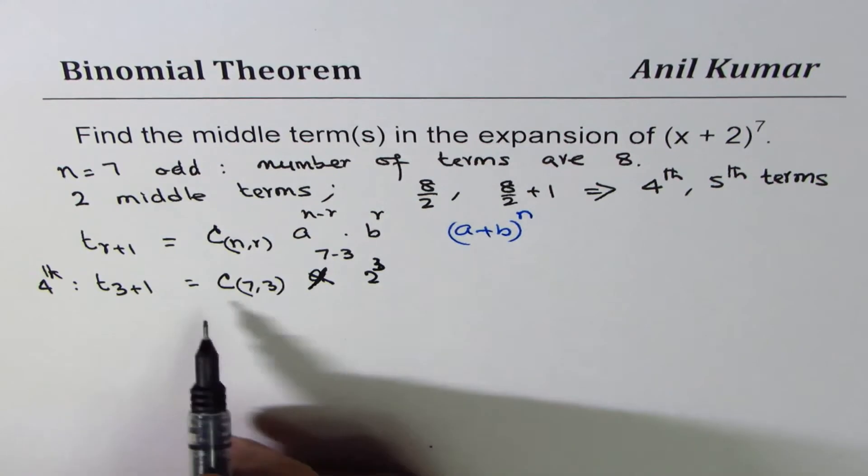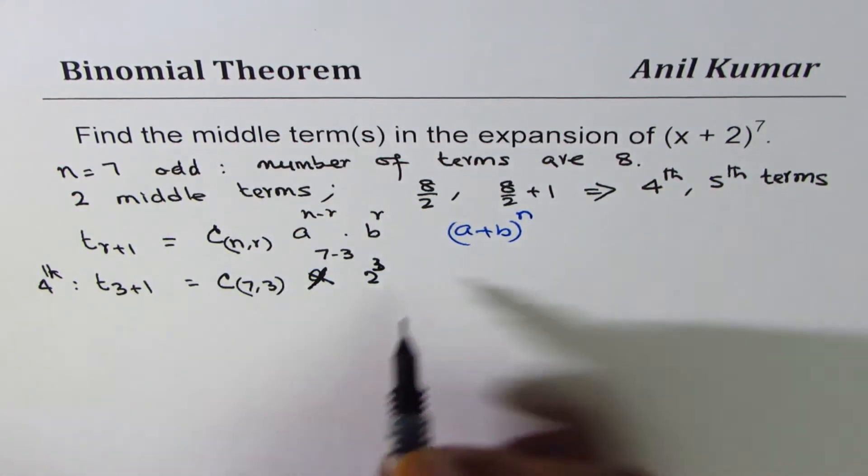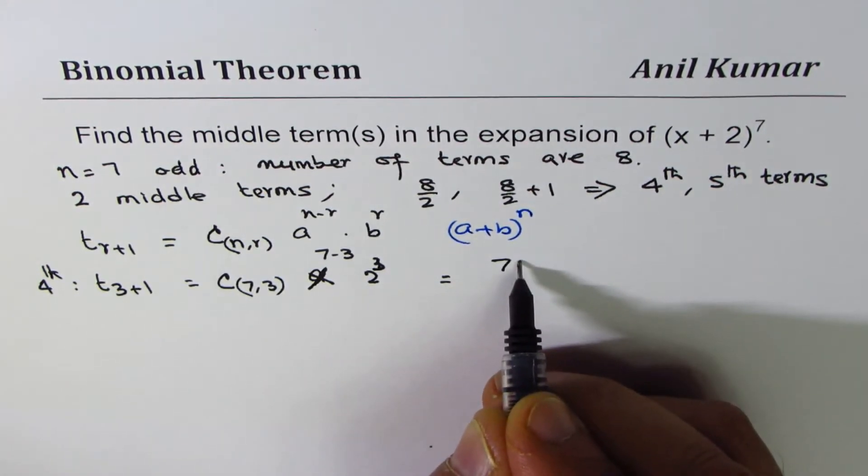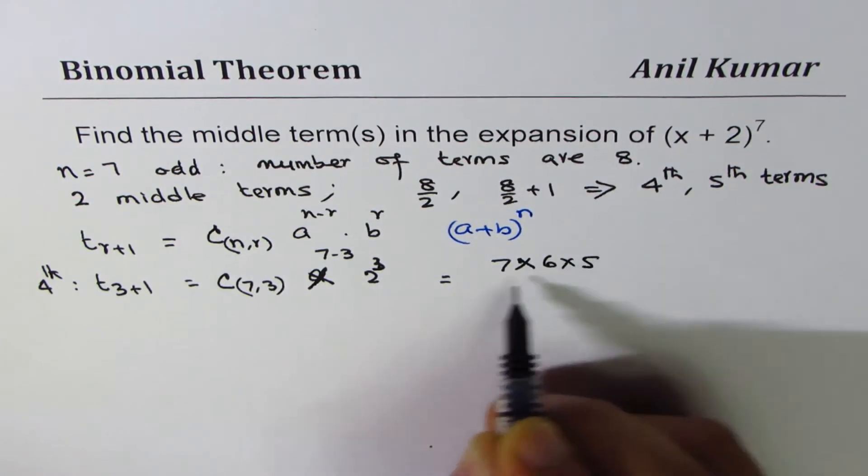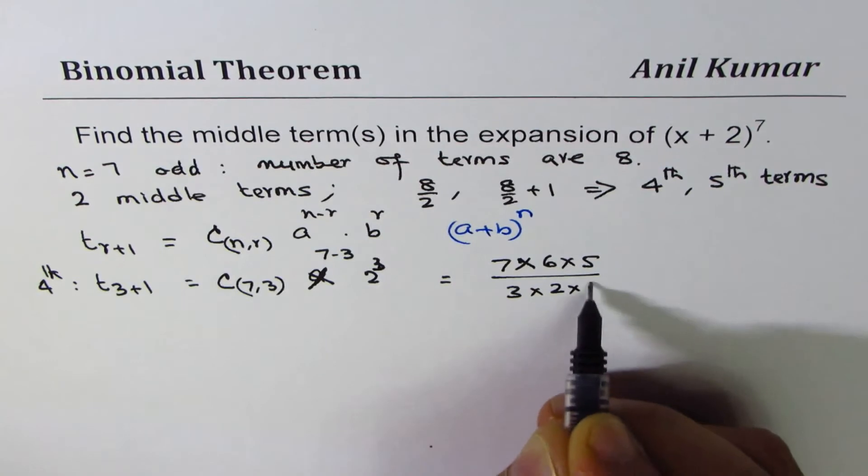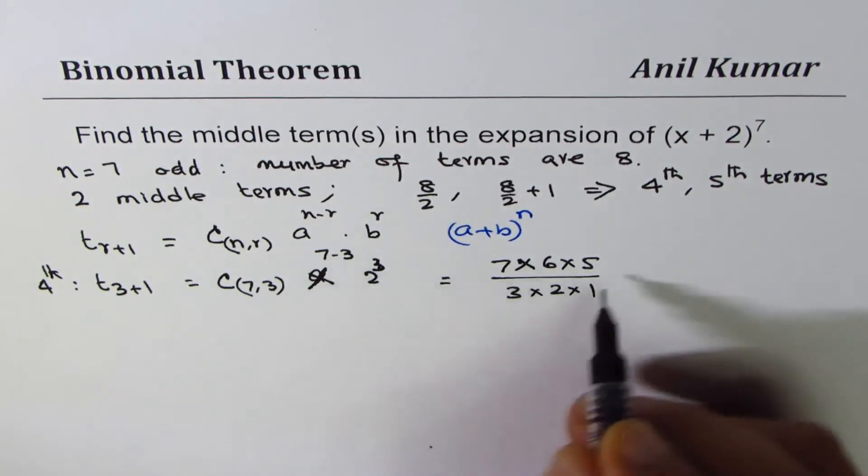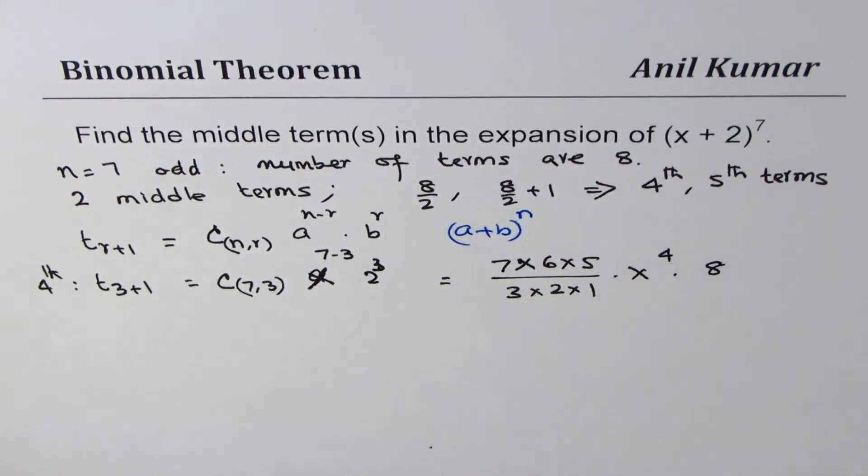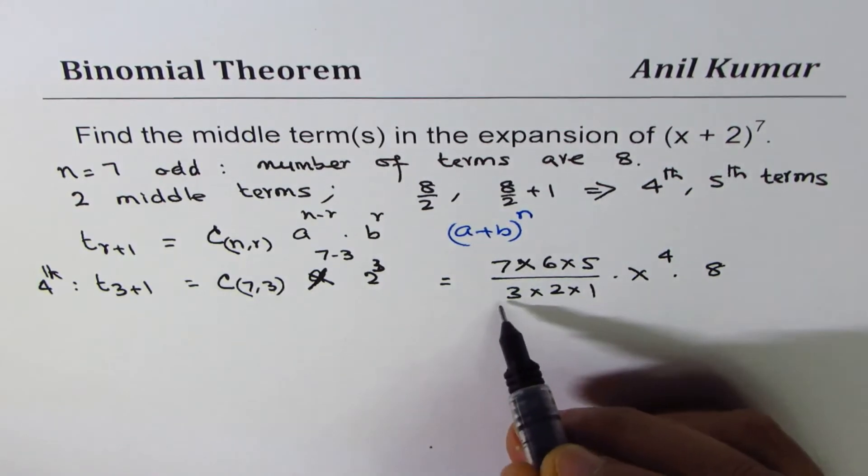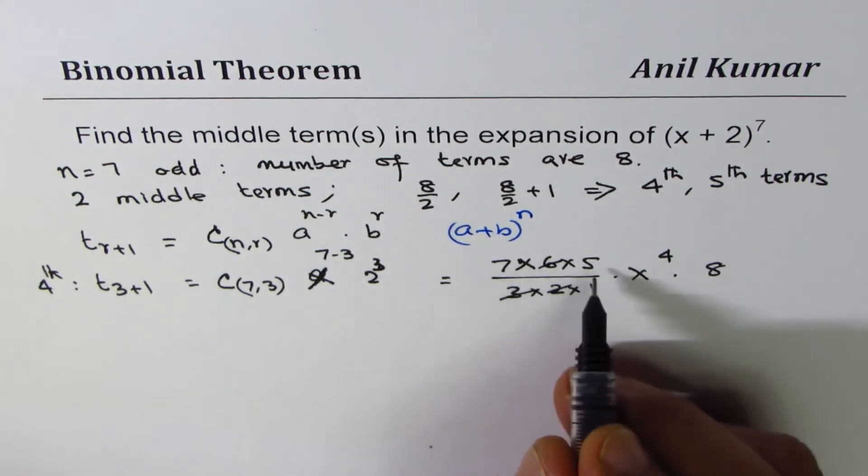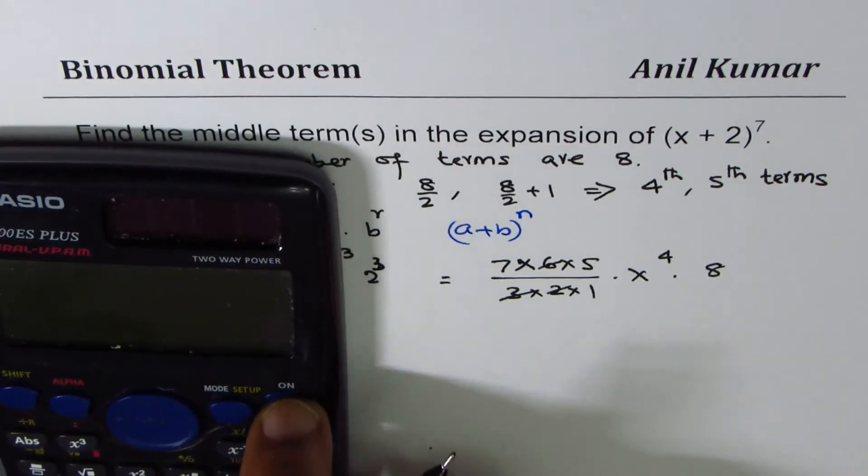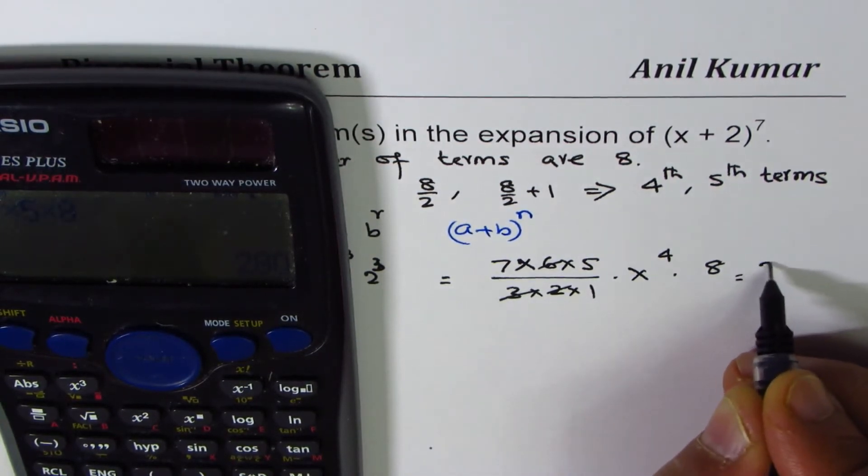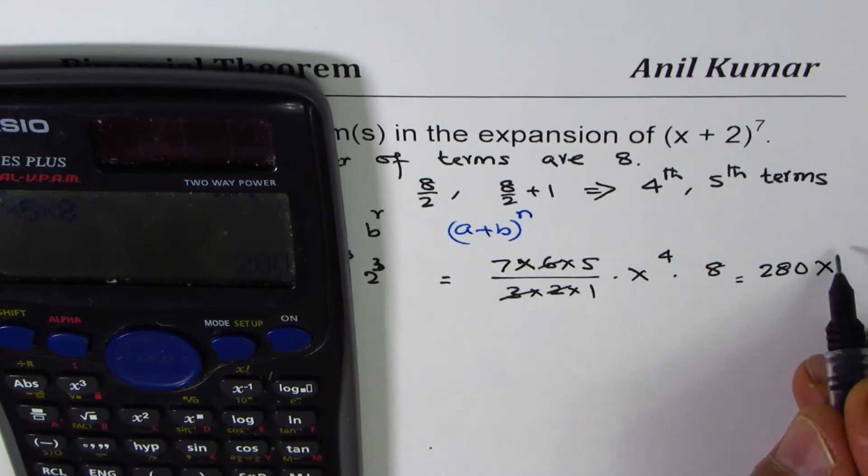2 to the power of 3. So that becomes the 4th term you can calculate. 3 times 2 is 6, we get 35 times 8. So we have 7 times 5 times 8 equals 280. So it is 280X^4.